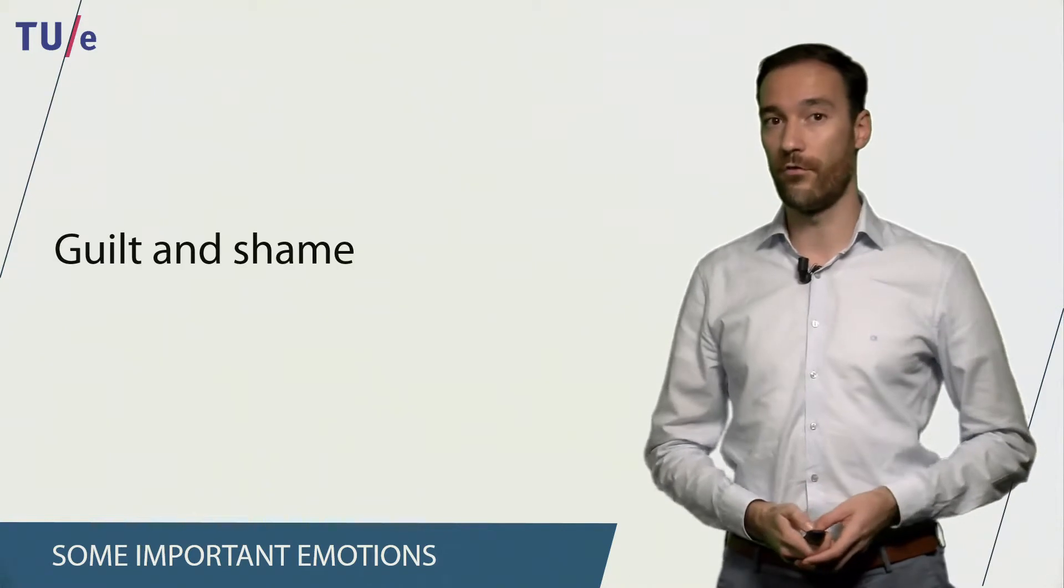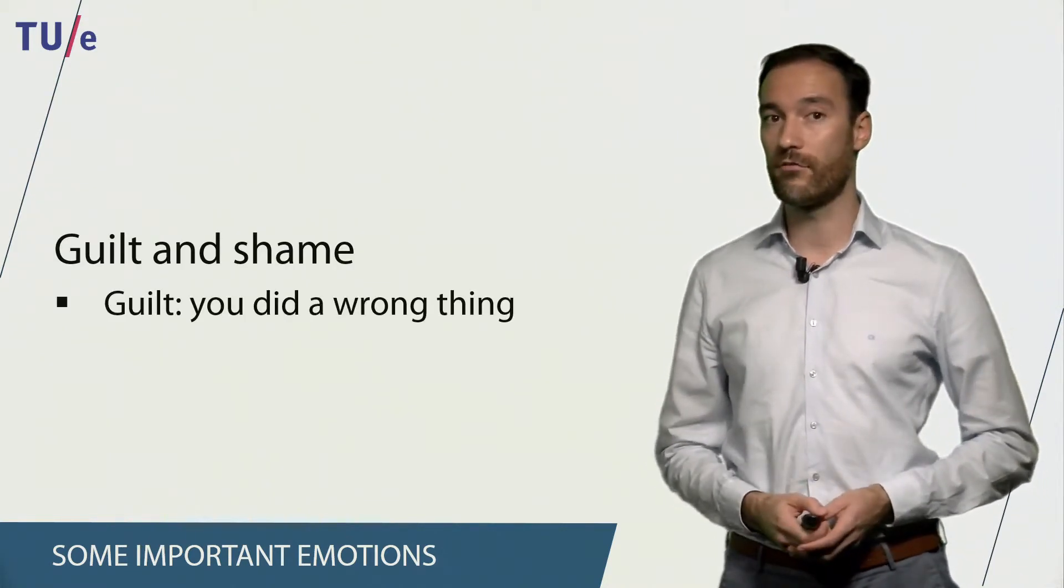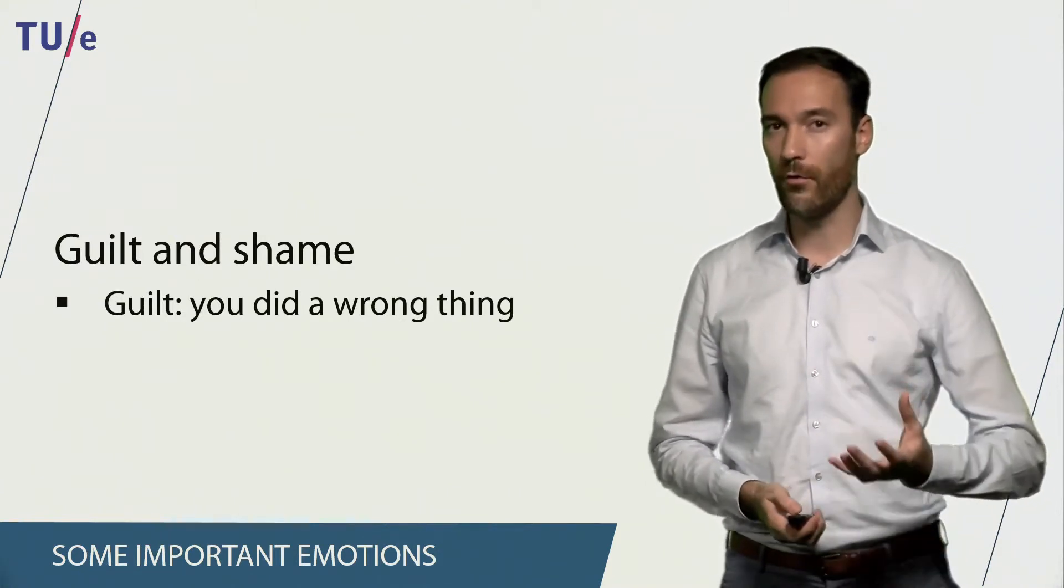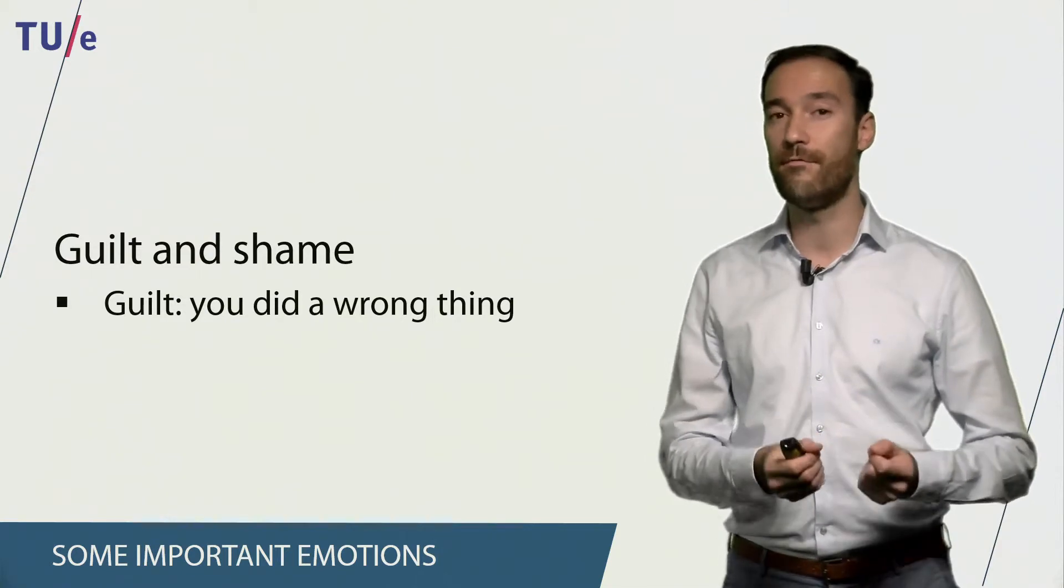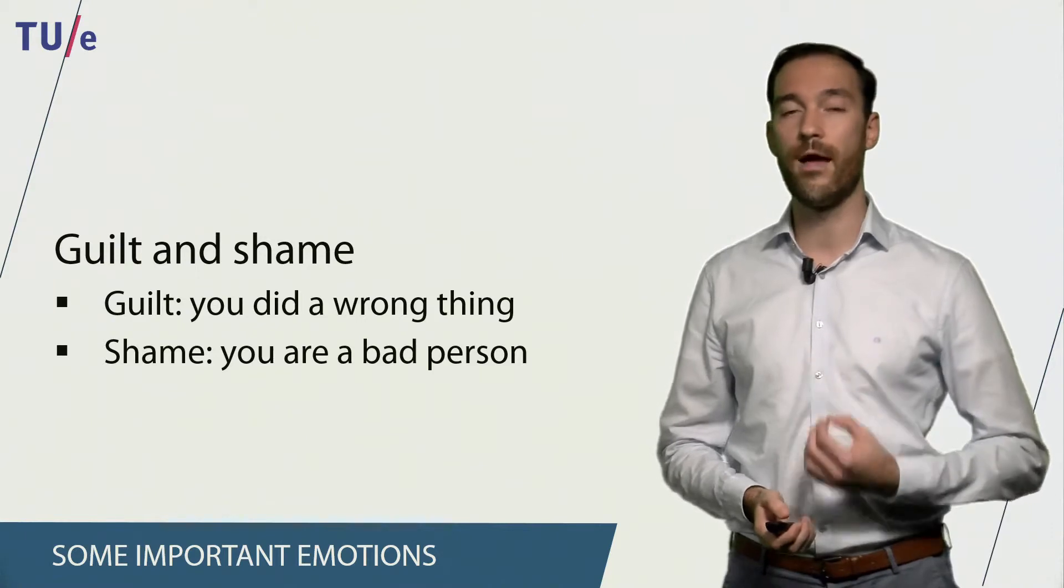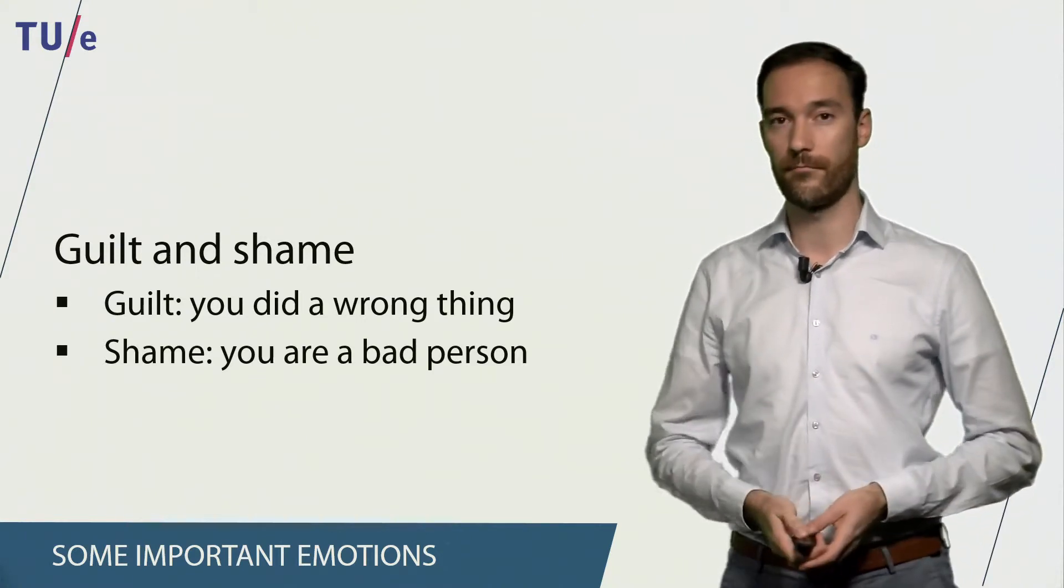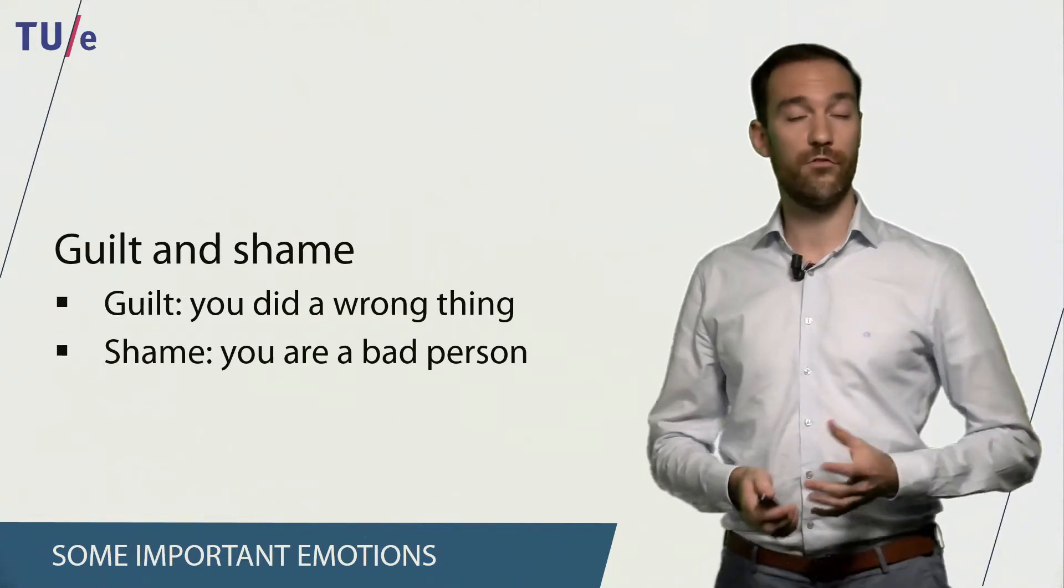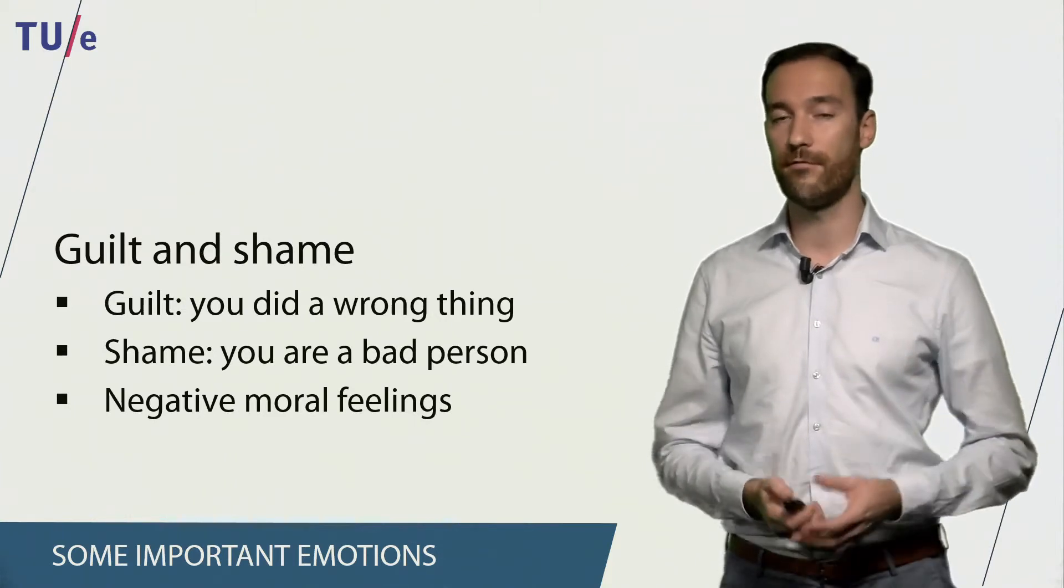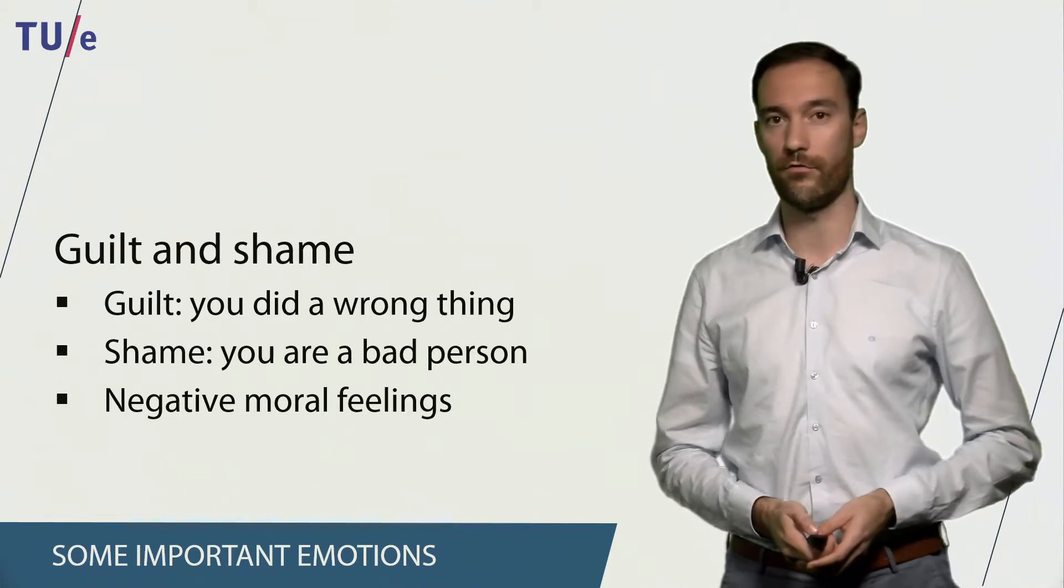The third emotion or set of emotions are guilt and shame. Guilt can be described as feeling that you did a wrong thing. So guilt really focuses on a specific event or a specific thing. If you feel shame, then you feel that you are a bad person. So this really reflects on you as a whole person. Even though these two emotions are a bit different, both of them show that they are negative moral feelings and they are related with a decrease in physiological arousal.